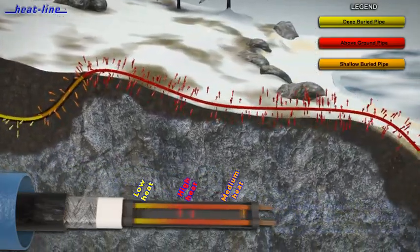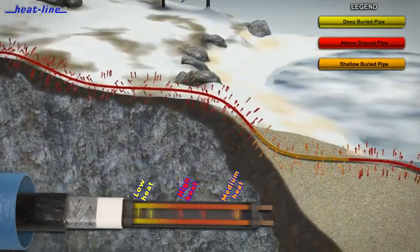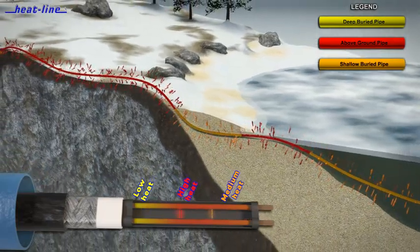As the pipe warms, the heating cable automatically reduces heat output in that specific area.